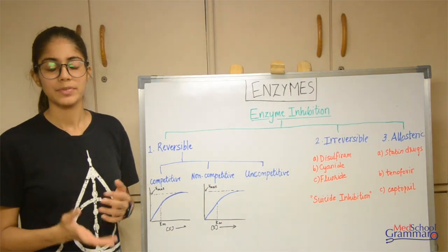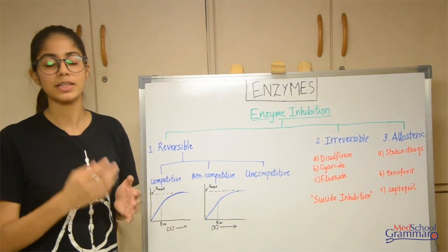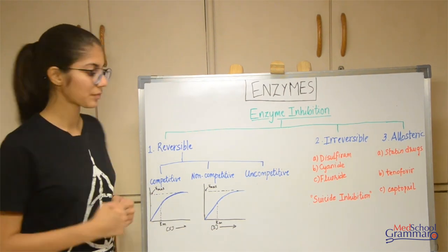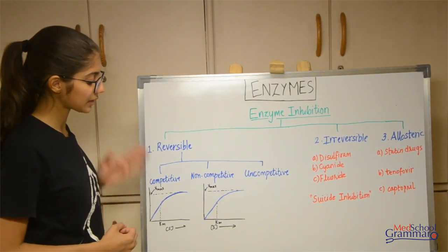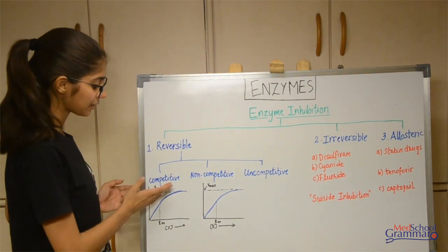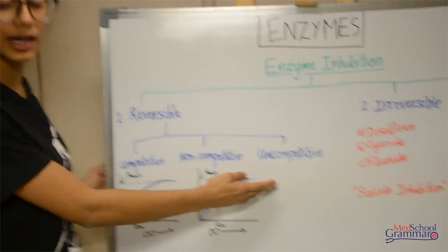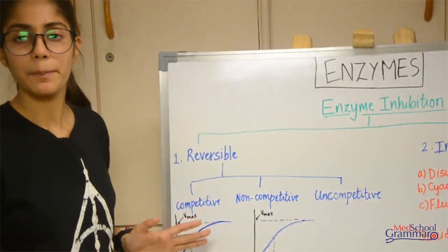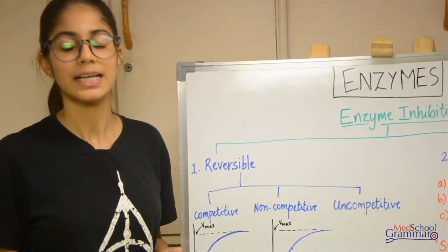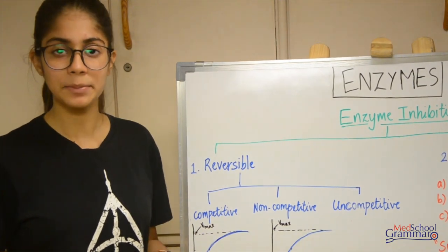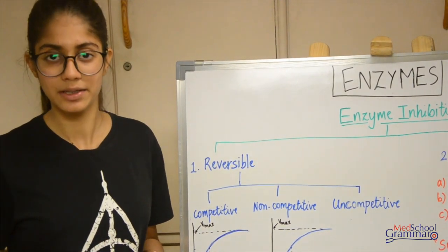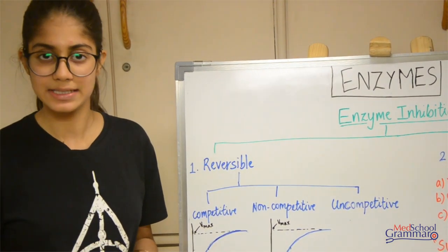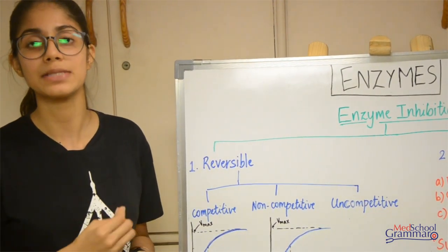Reversible, as the name tells you, can be reversed. So once the inhibitor is removed, normal enzyme activity can continue. Reversible enzyme inhibition is further divided into three types: competitive, non-competitive, and uncompetitive. Now in competitive inhibition, basically what happens is that your substrate and inhibitor are structurally similar. So the inhibitor competes with the substrate for the active site of the enzyme. They both compete for the same site.